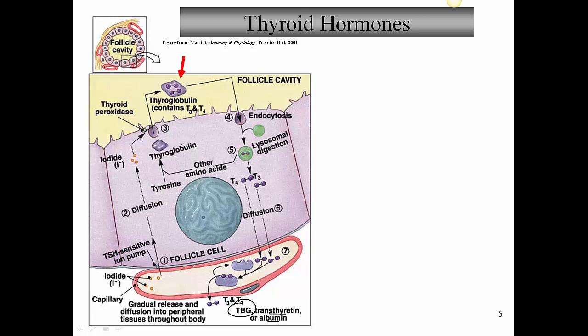The second thing TSH does is stimulate uptake by the follicular cells of amino acids - in particular the amino acid tyrosine, which is what thyroglobulin is made from - and it also stimulates uptake of iodide. This is the only place in the body where we use iodine; it travels in the blood as iodide, the anionic form. It's taken into the cells, converted into iodine, and fused with tyrosine to form thyroglobulin, which then goes into the follicular cavity and is stored until needed by the body.